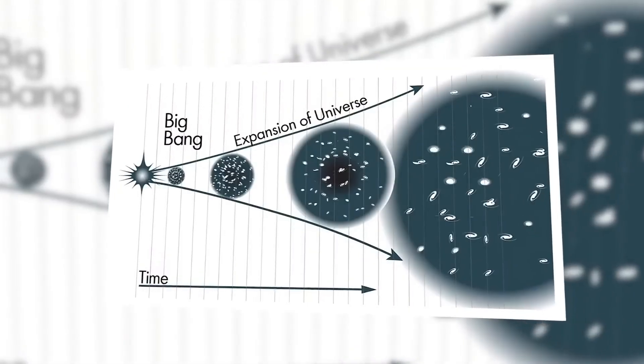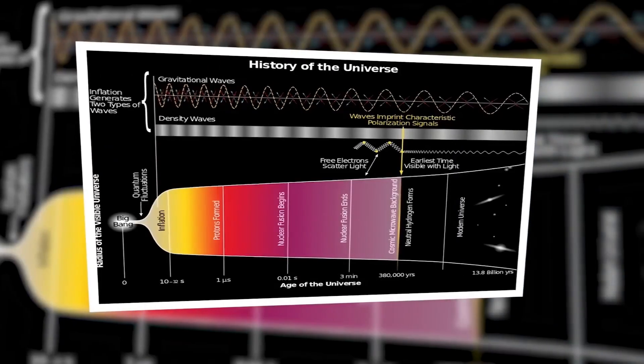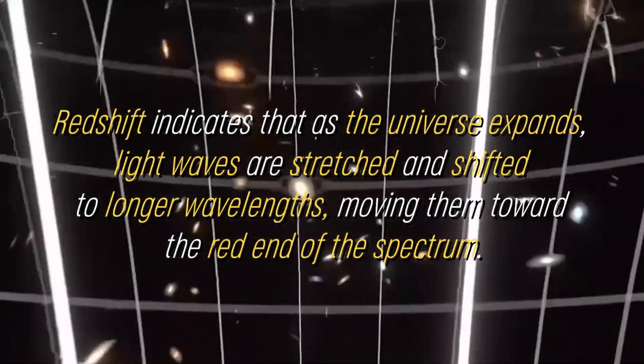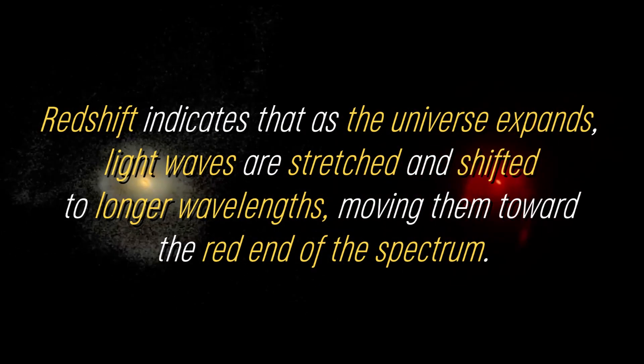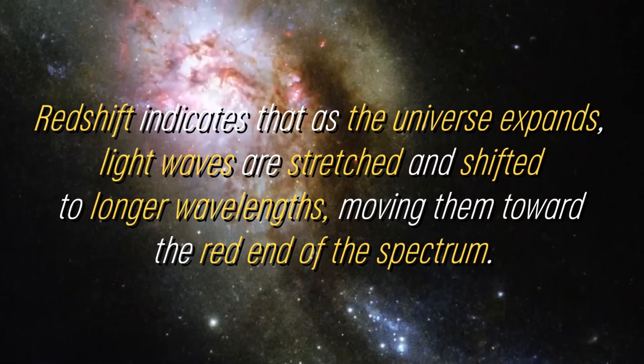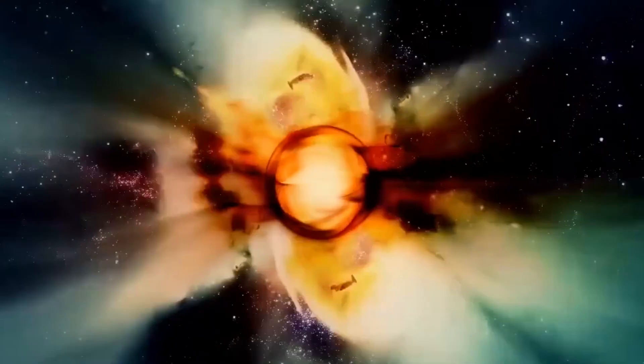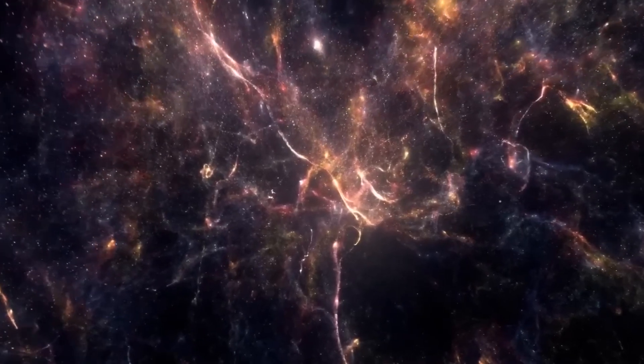Scientists have observed the effects of this expansion through various observations, such as the redshift of light from distant galaxies. Redshift indicates that as the universe expands, light waves are stretched and shifted to longer wavelengths, moving them toward the red end of the spectrum. During the expansion, all the stuff that makes up our universe was compressed into an incredibly small volume. It was clear that matter could not survive in such a compact space, so transformations occurred as the universe expanded and cooled.